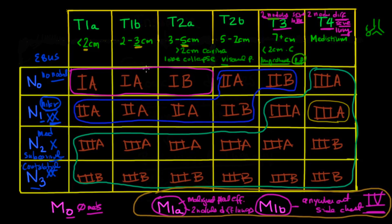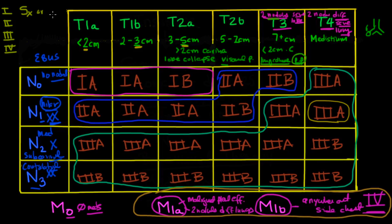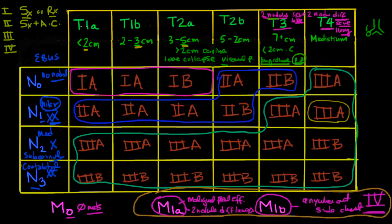Depending on whether you have a stage 1, 2, 3, or 4, there are different treatments. For stage 1 cancer, the treatment is surgery. If you're not operable, then the treatment is radiation therapy — surgery is to cure this. For stage 2, we still do surgery, but we add adjuvant chemotherapy — chemotherapy done after surgery. Neoadjuvant chemotherapy, where you do chemo before surgery, is not standard here. In stage 2: surgery first, then adjuvant chemotherapy.